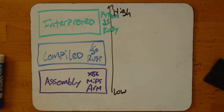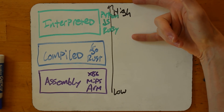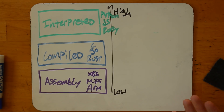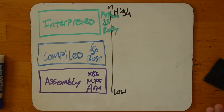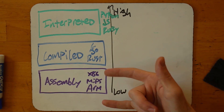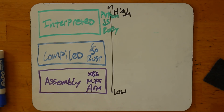You can already tell, if you've programmed in multiple of these languages, that Python, JavaScript, and Ruby are easier to use — more friendly to humans. Here in the middle you think of these as more systems-level languages and people say they're more challenging to use. Assembly language — if you already know someone who writes it regularly, this video is probably redundant to you, as it's not very common to write assembly language anymore.